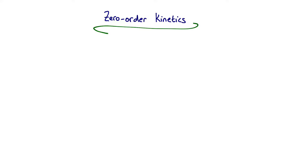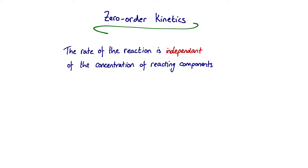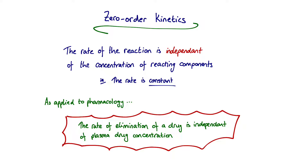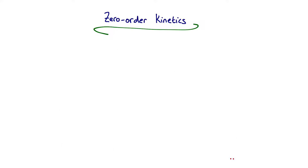Starting with zero order kinetics, an overarching definition is that the rate of reaction is independent of the concentration of reacting components — another way of saying that is that the rate of the reaction is a constant. Applying this to a pharmacological context, if a drug exhibits zero order kinetics then the rate of elimination of that drug is independent of plasma drug concentration, and we can represent that graphically.